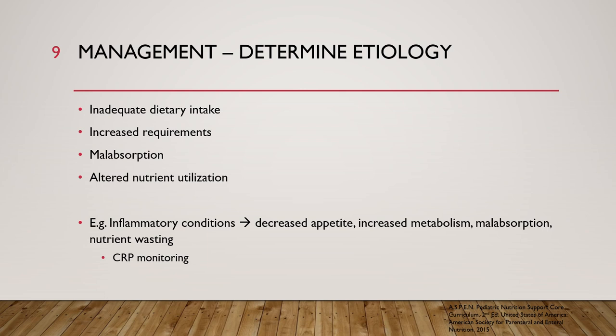When managing malnutrition, the most important thing is to determine the etiology or underlying cause. Examples include inadequate dietary intake, increased requirements, malabsorption, and altered nutrient utilization. Inflammatory conditions can cause decreased appetite, increased metabolism, malabsorption, and nutrient wasting—which is one reason we monitor CRP in these patients.